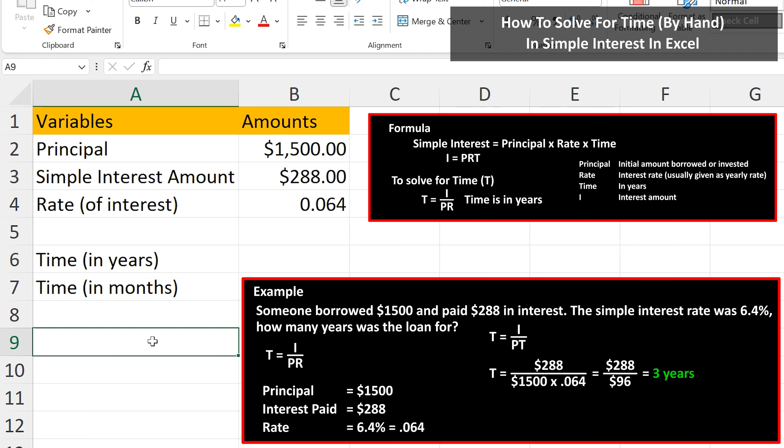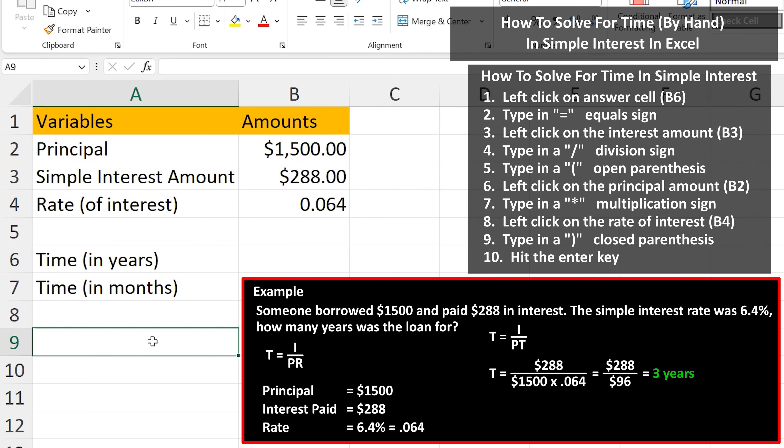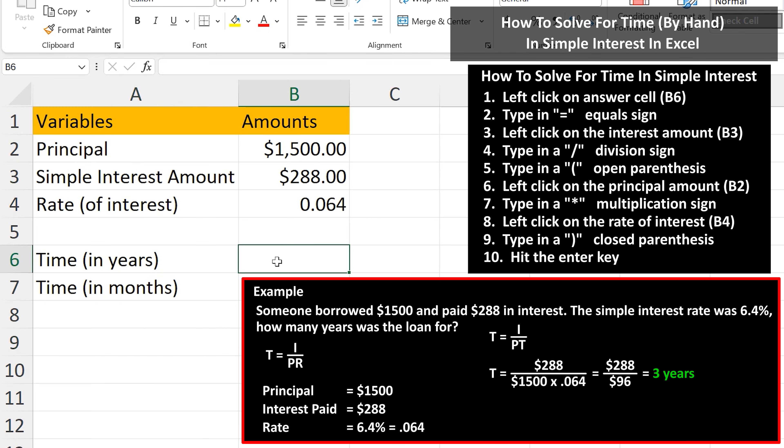I've listed the variables and amounts as you see here in Excel. We're going to put the answer in cell B6, so left click on B6 so it is highlighted.